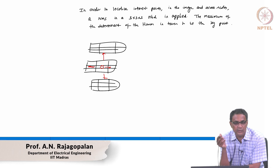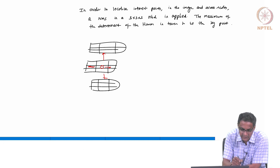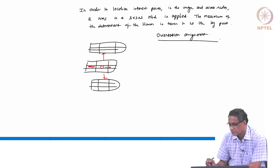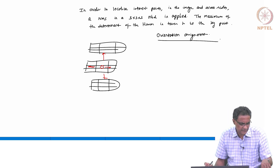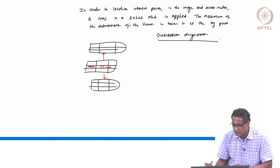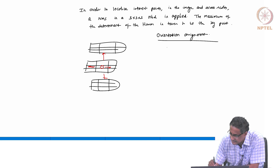Once you have an interest point, you have to somehow follow what we did earlier. The next thing we do is give an orientation assignment. Once this is done, you need to do the orientation assignment. This is done slightly differently — it uses the Haar wavelet, because this has to do everything with a box filter. It is done using a Haar wavelet.